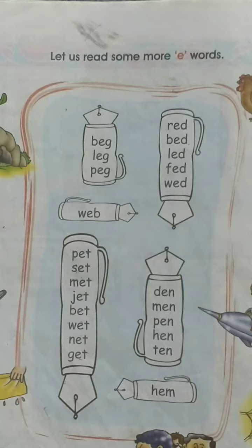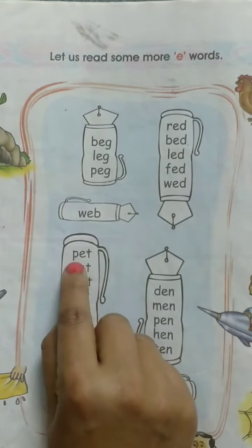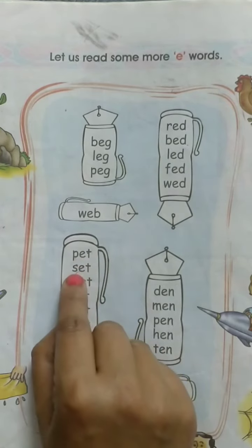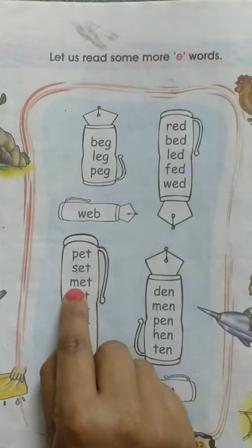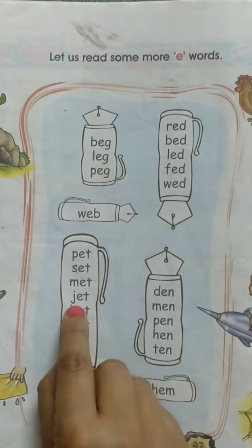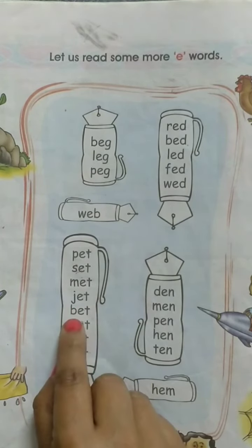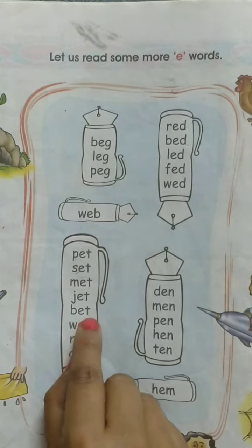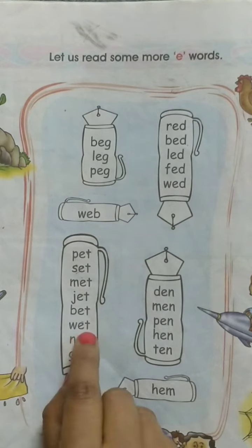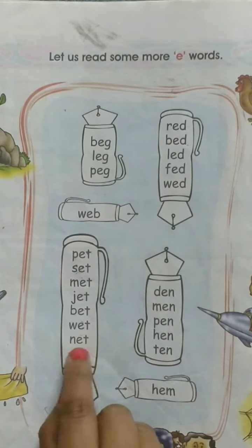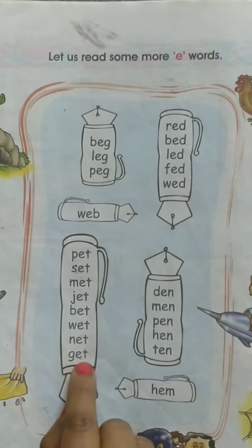Children, let's revise all these words once again. P-E-T, pet. S-E-T, set. M-E-T, met. J-E-T, jet. B-E-T, bet. W-E-T, wet. N-E-T, net. G-E-T, get.